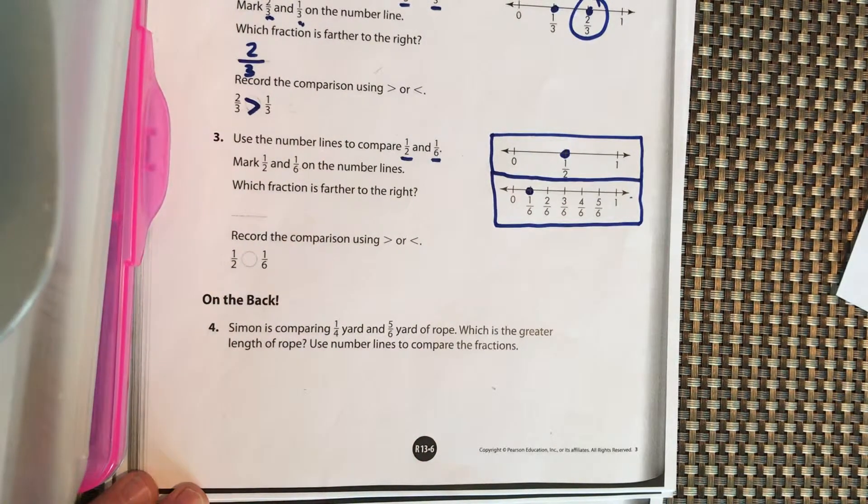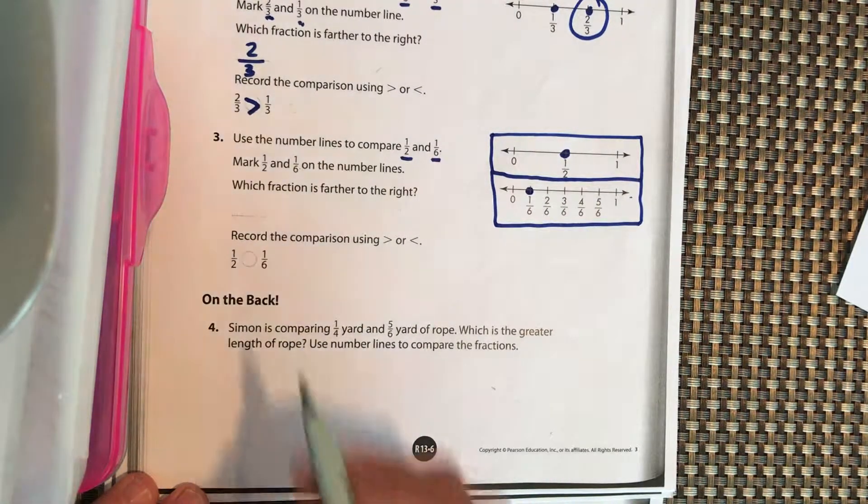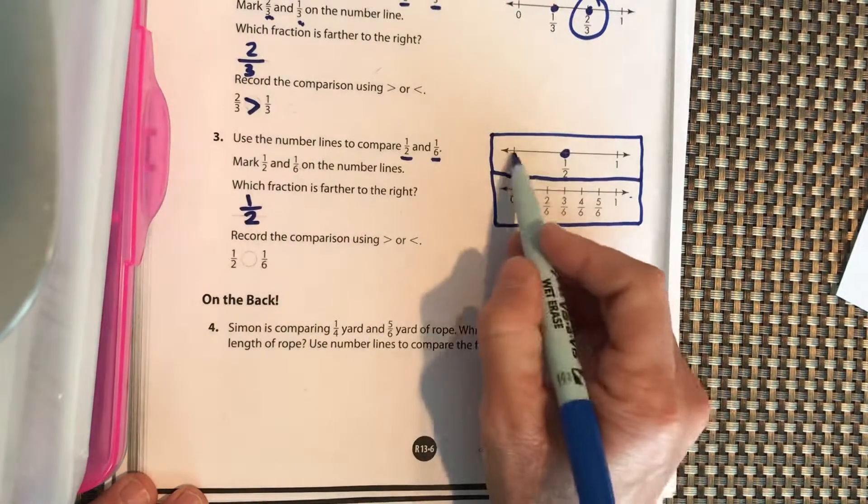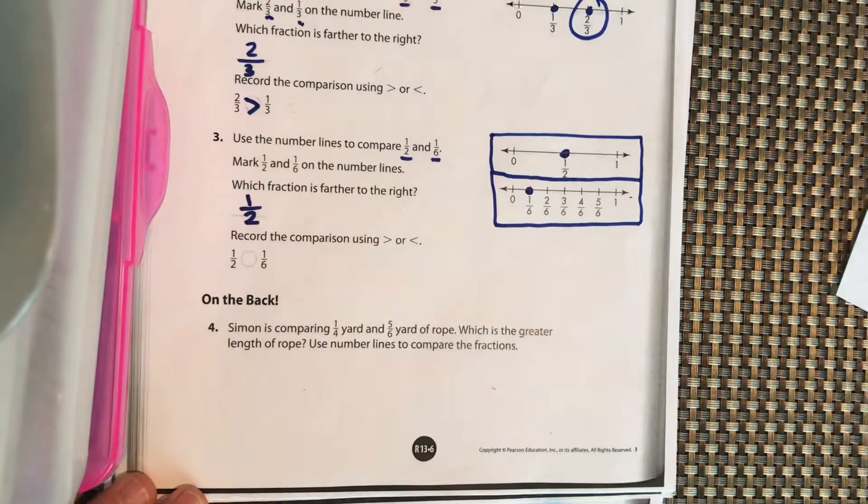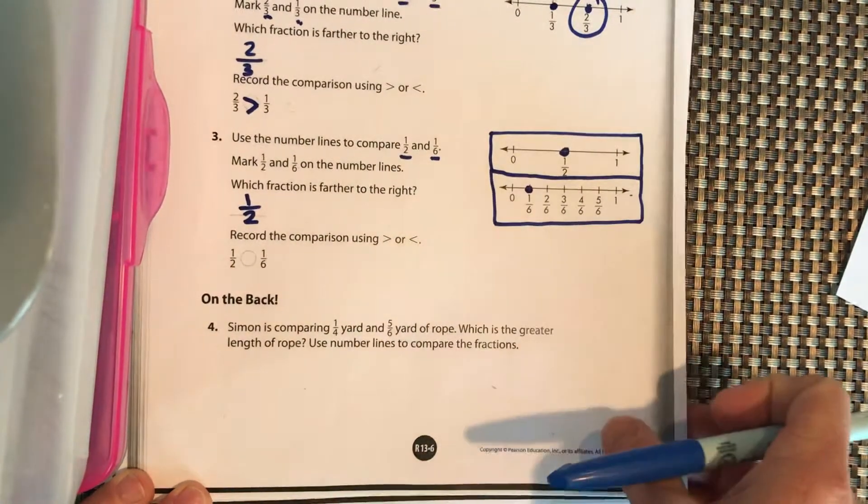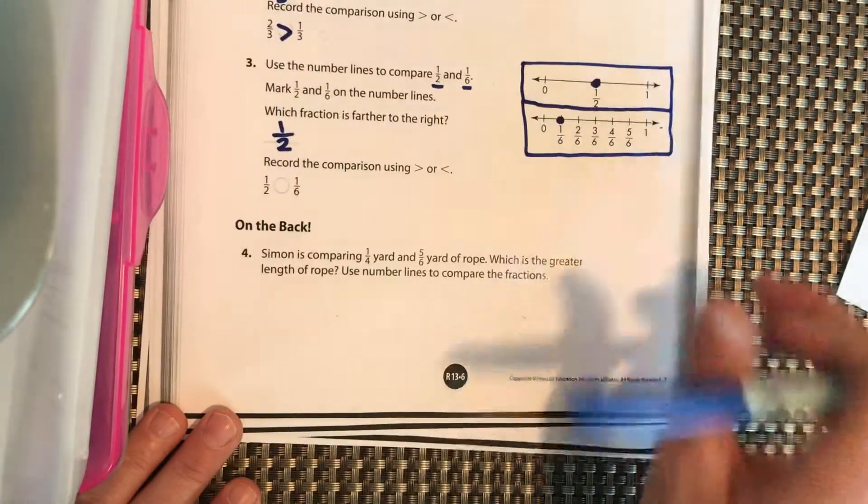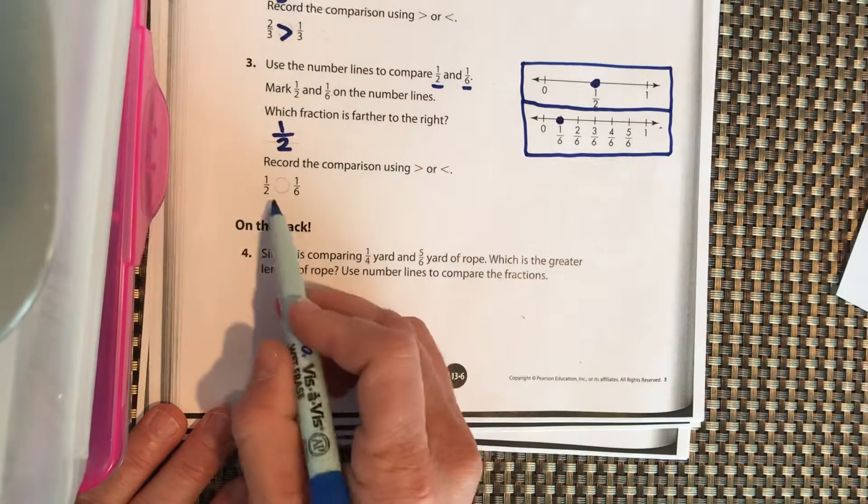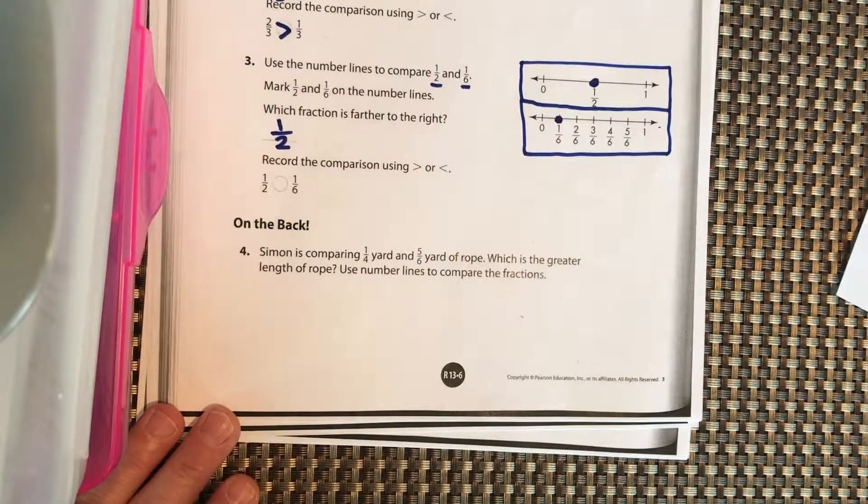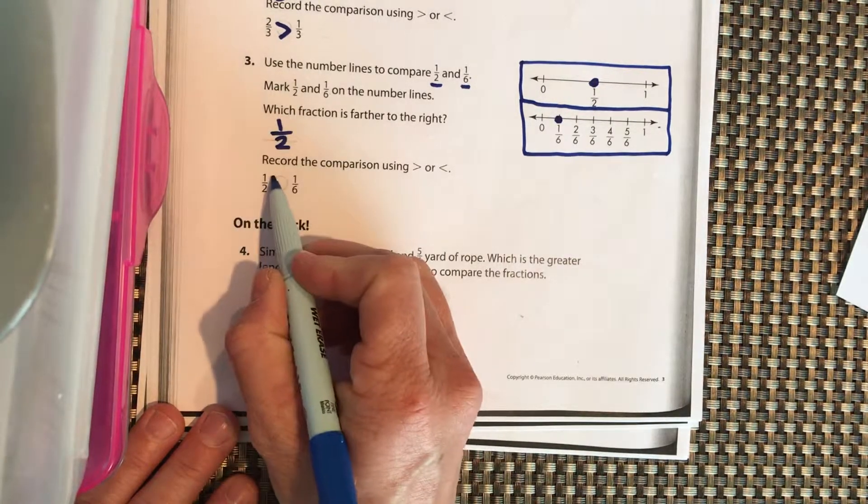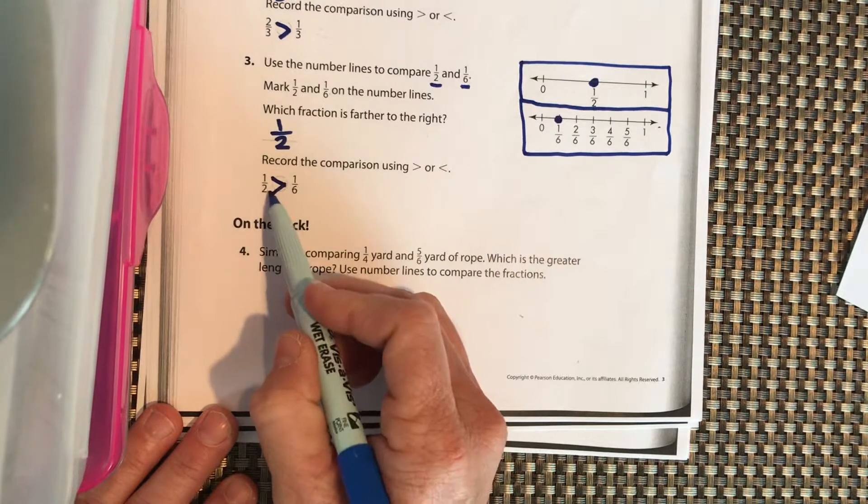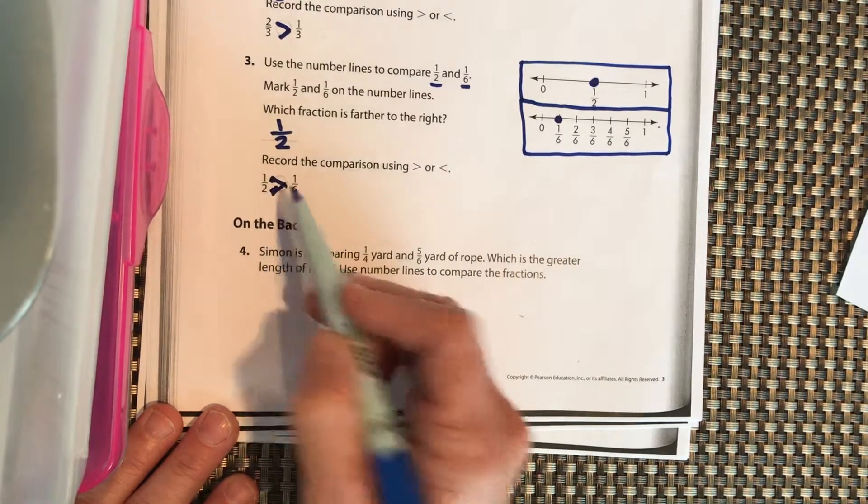You can pause it if you need to. You should have written 1/2, right, because it's further to the right, which means it's larger. So then go ahead and write the comparison here, greater than or less than, for 1/2 compared to 1/6. Pause it. So 1/2 is greater than 1/6, so it should be eating the bigger fraction, pointing to the smaller one.